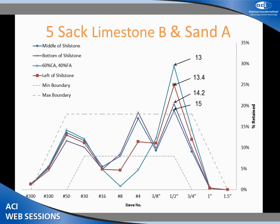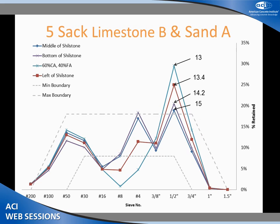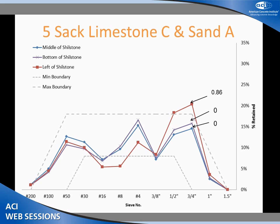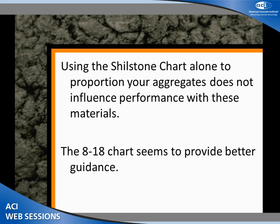Let's look at another mixture. Again, 15, 14, 13 — all these blue lines are dead center of the Shilstone box. Let's look at another one. Zero? We have a big mountain here, a small mountain, intermediate. The bigger mountain goes down and gets better — we knock everything down in terms of the 818 and we need no water reducer. Let's plot everything in terms of the actual Shilstone box: all three of these data points are in the exact same spot, yet they need drastically different amounts of water reducer. The Shilstone chart alone to proportion your aggregate does not influence performance. The 818 chart seems to provide much better guidance on what's actually going on.